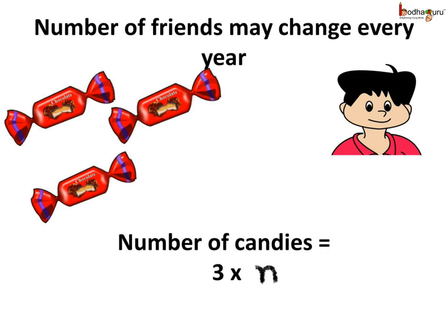Its value is not fixed — it can take any value, say 1, 2, 3, 4, 10, 12, etc. And here we wrote the rule for the number of candies required using the variable n. So we see the word variable means something that can vary, that is change. The value of a variable is not fixed; it can take different values.